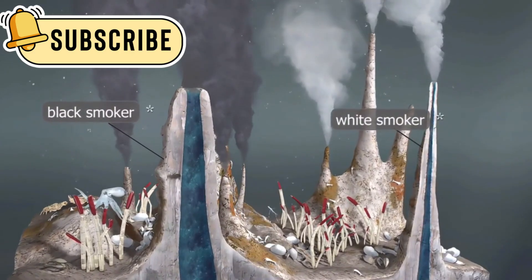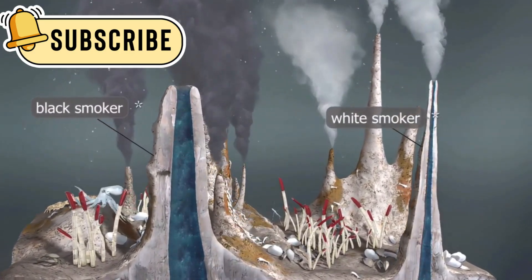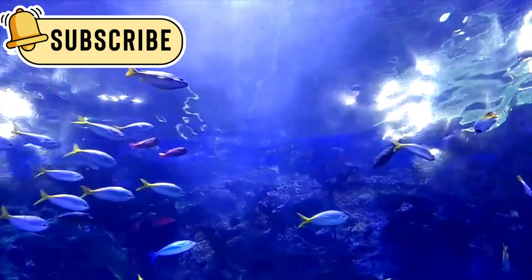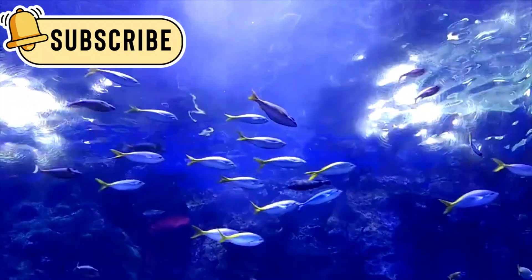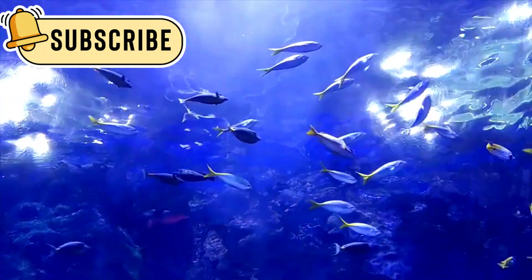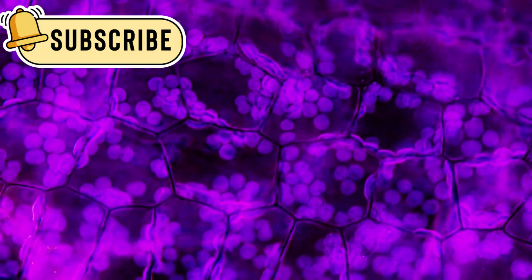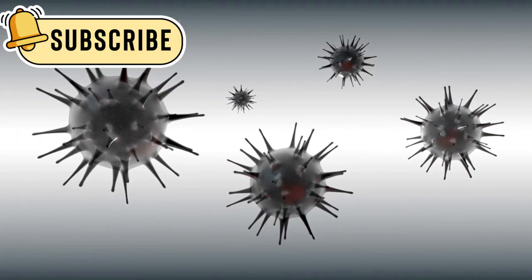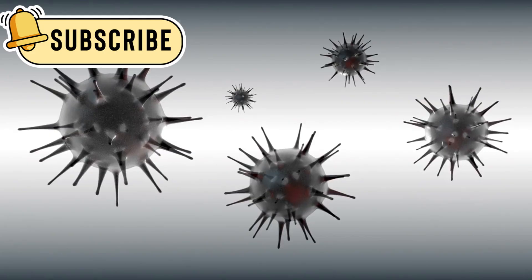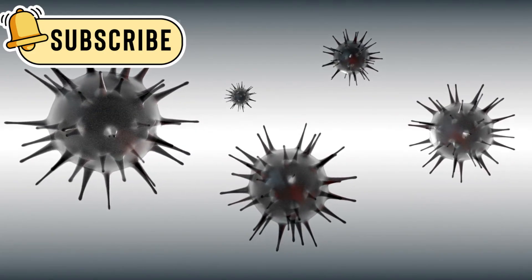On Earth, deep-sea ecosystems live around volcanic vents with no sunlight. These systems show that life can survive with only internal heat and the right chemicals. If similar conditions exist on Pluto, it raises the possibility of alien life. It wouldn't be advanced or intelligent life, but even microbes would be a groundbreaking discovery.